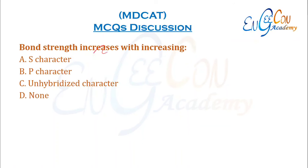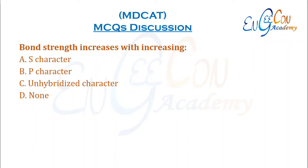Bond strength increases with increasing what? Bond strength is directly proportional to the s-character of the orbital. The greater the s-character, the greater the bond strength. So A is the correct option.